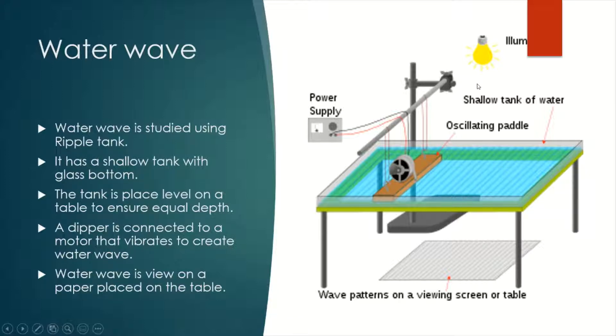Above the Ripple Tank, there is a bulb. This bulb provides light that passes through the water waves. We see the water waves from a piece of paper placed below, so the water wave pattern can be viewed from the piece of paper.